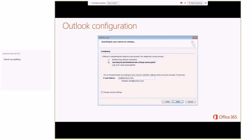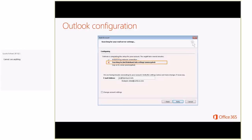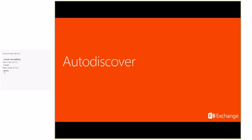There are three steps in this process. The first step establishes a network connection — this step almost never fails. The second step is where it actually goes out and searches for the mailbox settings for the user. Then once the client has the settings, it attempts to connect using those settings, using either Outlook Anywhere or MAPI over HTTP, depending on what was returned. For this webcast, we're going to focus on that second step, where it's searching for user settings and why it fails. It's important to know that this second step utilizes AutoDiscover.